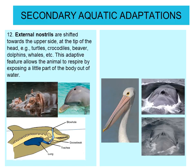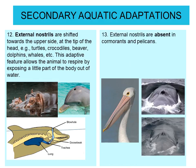Regarding external nostrils, they are either shifted towards the upper side at the tip of the head — for example, in turtles, crocodiles, beavers, dolphins, and whales. This adaptive feature allows the animal to respire by exposing only a small part of the body out of water.